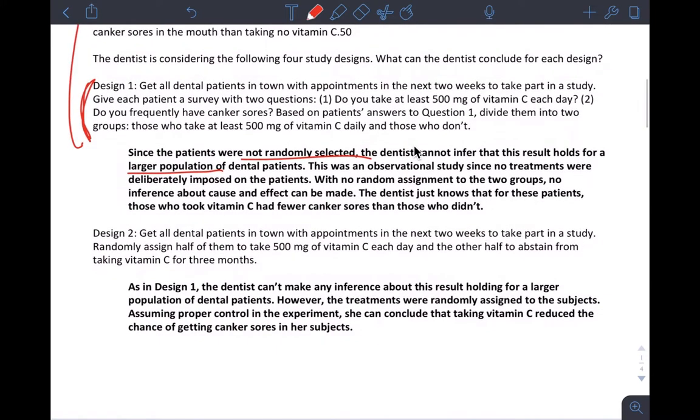But it says here, patients were not randomly selected. So I can't take my results back to the larger population. And it says it was an observational study. No treatments were imposed. And there was no random assignment. So I can't infer anything about cause and effect either. So all I know is that these patients who took vitamin C had fewer sores. That's it. Not very useful information.